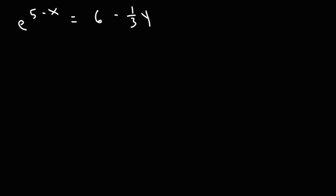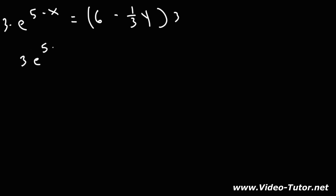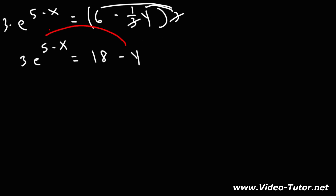Now we need to do something with the 1 third in front of the y. I'm going to multiply both sides by 3. On the left, I'm going to have 3e raised to the 5 minus x. Now 3 times 6 is 18, and 3 times negative 1 third y — the 3s will cancel, giving us negative y. I want positive y and not negative y. So I'm going to move negative y to the other side, and it's going to be positive y. This term I'm going to move to the other side — it's positive on the left, but it will be negative on the right.